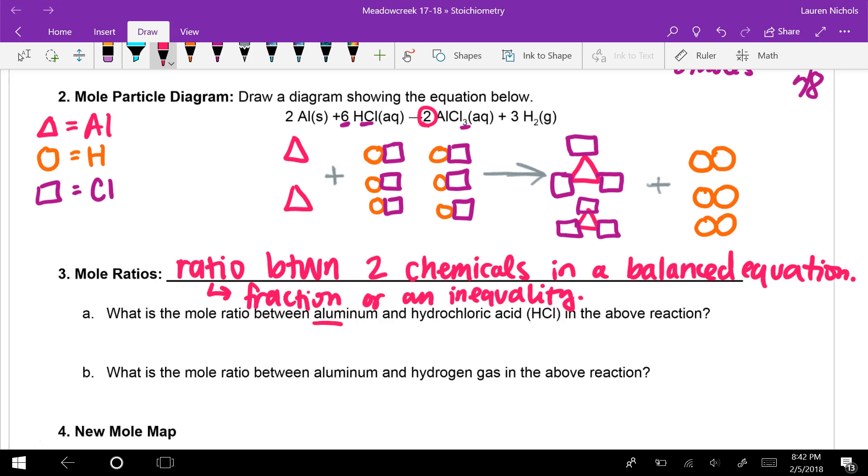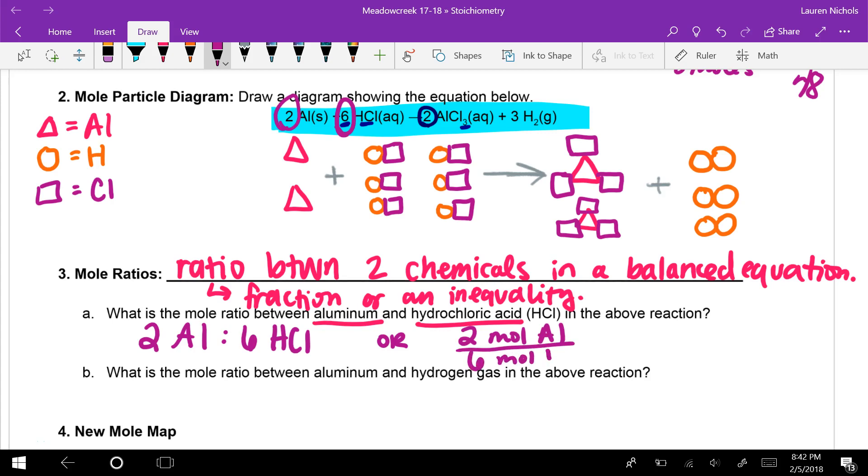So I'll show you what I mean by that. So if we look at A, it says what is the mole ratio between aluminum and hydrochloric acid in the above reaction? So the above reaction they're talking about is this one right here. So if we're looking at aluminum, our mole ratio means we're talking about moles. So the number of moles in this reaction is two because that is what my coefficient is. So two aluminum, and then the colon right there or the two dots, that makes it an inequality for hydrochloric acid. Well, HCl has a six as a coefficient. So six HCl. We could also write it as a fraction. So it could also be written, because aluminum is written first, it goes on the top. So two moles of aluminum for every six moles of HCl.